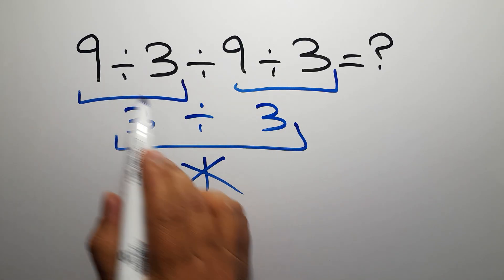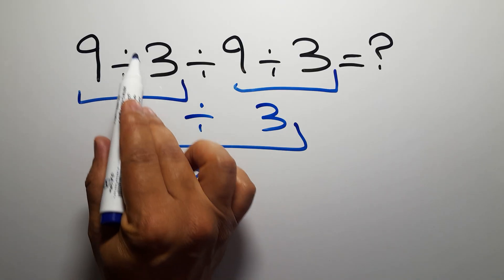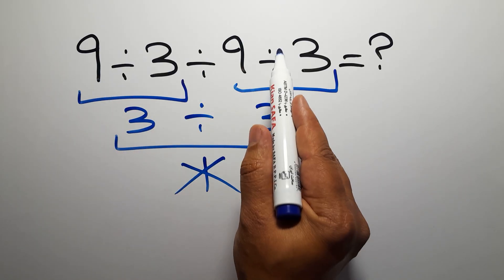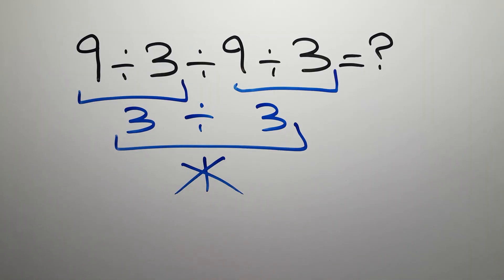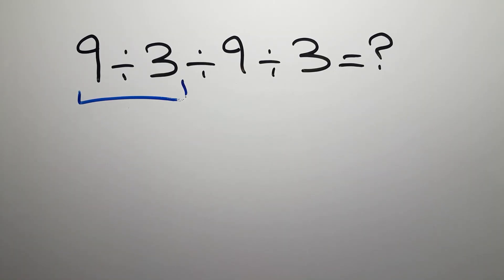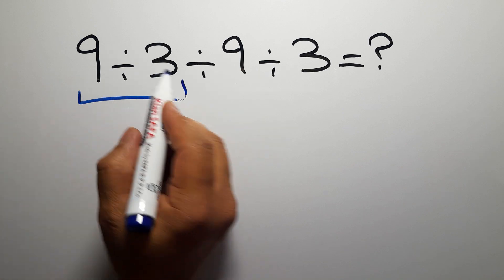So first this division, then this division, not this division, and finally we have to do this division. Okay, let's do it. So first this division: 9 divided by 3, which gives us 3.